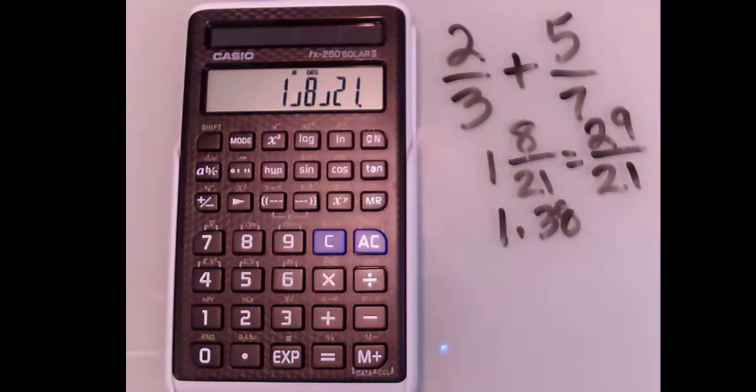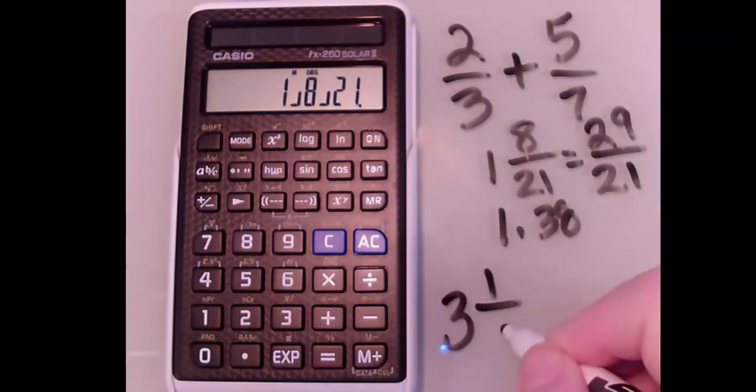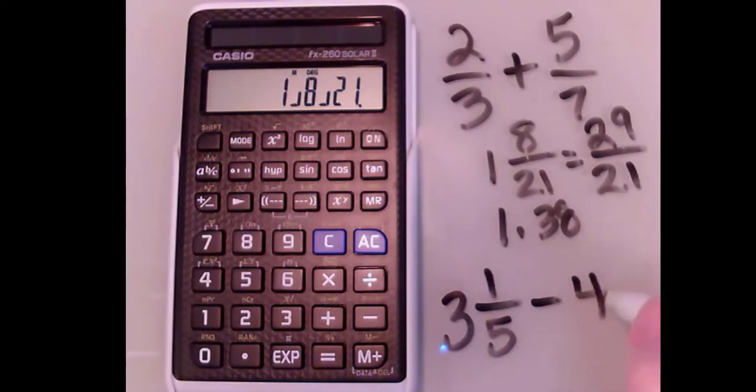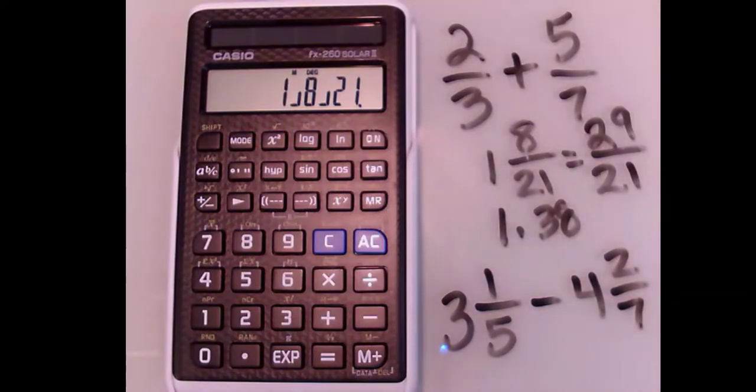So how do you actually enter a mixed number? Let's say I want to enter 3 and 1/5, and I want to subtract 4 and 2/7. I like sevenths.